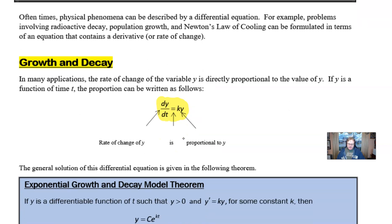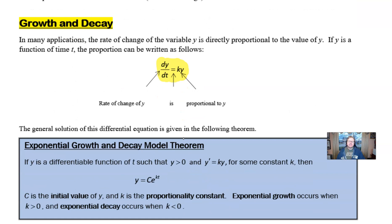I want to break that down and show you that it does have a solution if we were to solve it. So once again, if y is a differentiable function of t such that y > 0, and y' = ky for some constant k, then the solution of this differential equation is y = Ce^(kt). A lot of times I will affectionately refer to this as kecht.